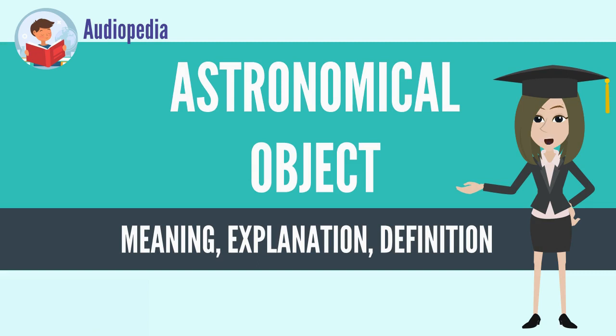while an astronomical or celestial object is a complex, less cohesively bound structure, which may consist of multiple bodies or even other objects with substructures.